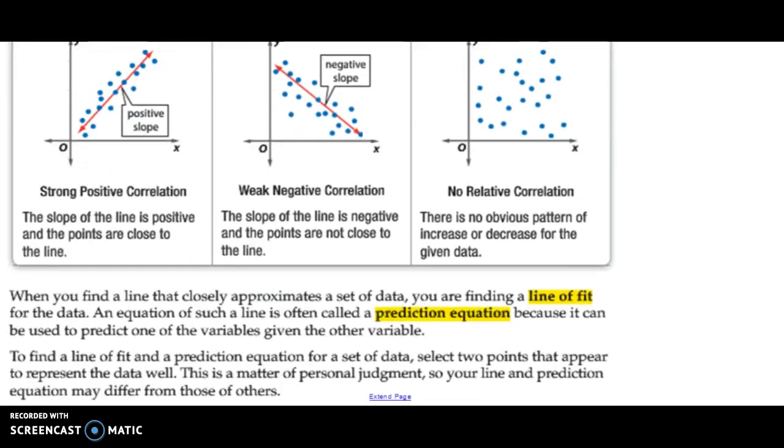Now, those lines, those red lines you see in the first two, are called a line of fit, or in our case, line of best fit. And those actually represent what are called some sort of prediction equation that you can use to predict data that's not graphed.